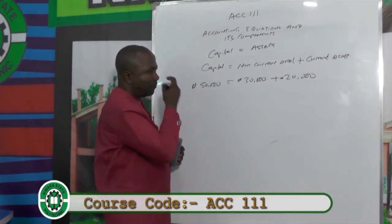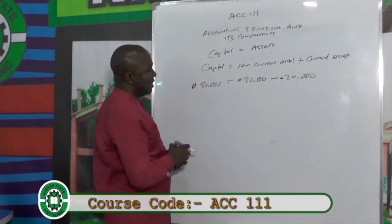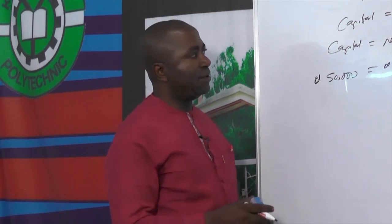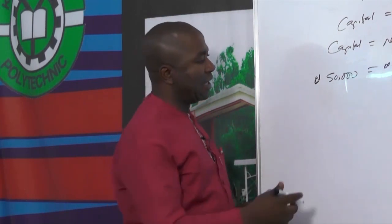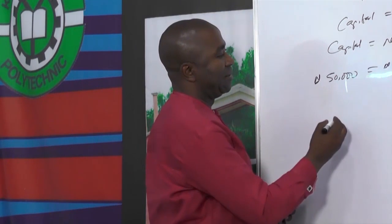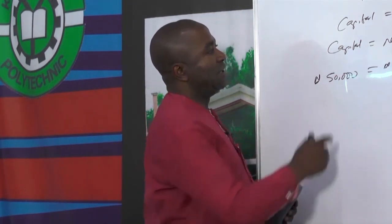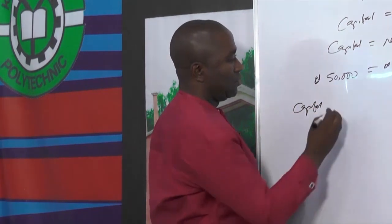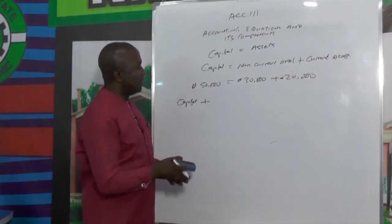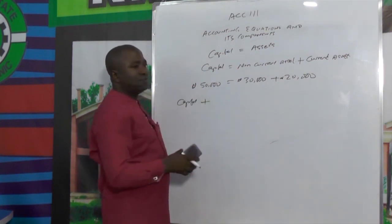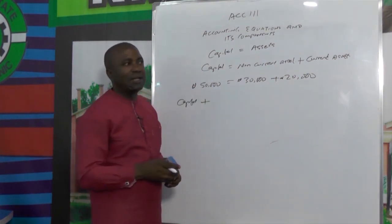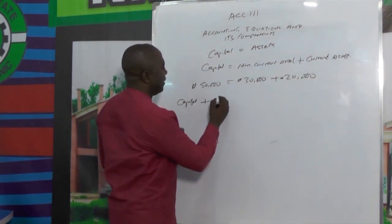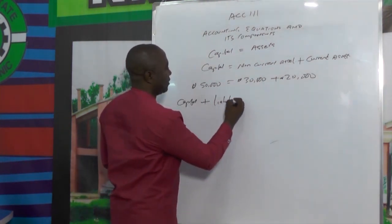Assuming the capital is not enough and you want to expand your business, in the case where you have to look for another source of money — probably from a friend — and you need an additional 30,000, that additional 30,000 you are adding to the 50,000 is what is referred to as a liability. So you now have capital plus liability.